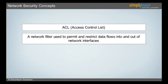When an ACL is configured on an interface, the network device analyzes the data which is passing through the interface, compares it to the criteria described in the ACL, and either permits the data to flow or prohibits it.